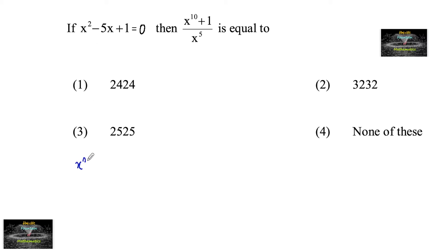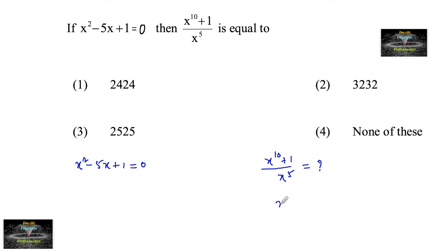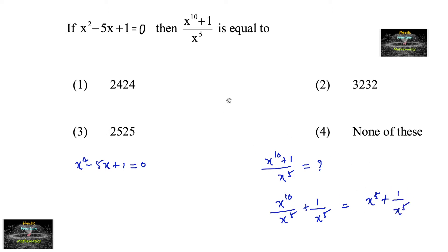If x squared minus 5x plus 1 equals 0, then x to the power 10 plus 1 upon x to the power 5 is equal to what? We can rewrite x power 10 plus 1 upon x power 5 as x power 10 divided by x power 5 plus 1 upon x power 5, which gives us x power 5 plus 1 upon x power 5. So we need to find x power 5 plus 1 upon x power 5.